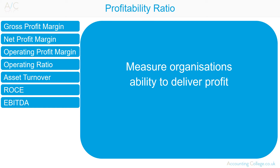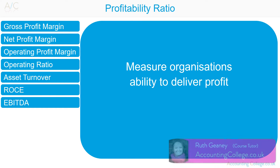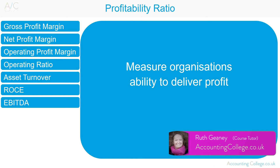Profitability Ratios. With profit-seeking organisations, the primary objectives are maximisation of shareholders' wealth. Financial performance can be measured using ratios. Profit is necessary for the survival and growth of profit-seeking organisations. Profitability ratios measure an organisation's ability to deliver profits. Profits are used by an organisation for investment, growth and to provide shareholders with returns.